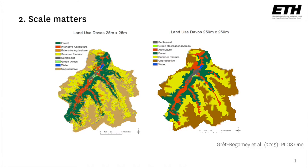The second big challenge is one many geographers have already heard about: the modifiable area unit problem. You see here two maps mapped at different scales — one at a smaller scale and one at a larger scale. When you map at a larger scale, you lose certain land use categories, which may have a big value for providing ecosystem services. So again, you need to understand what the stakeholders want to know, in order to choose the appropriate scale at which to assess your ecosystem services.